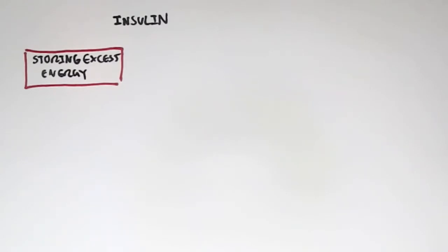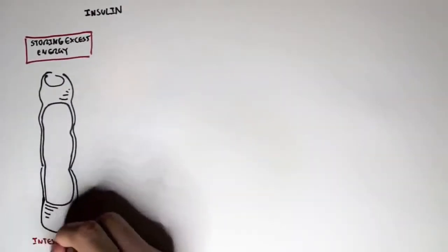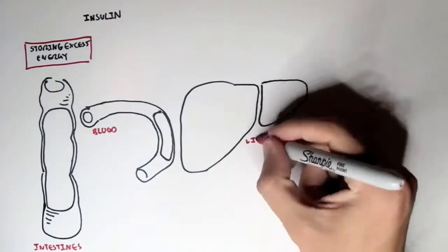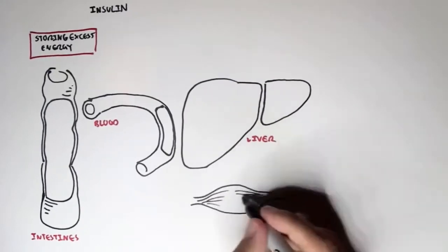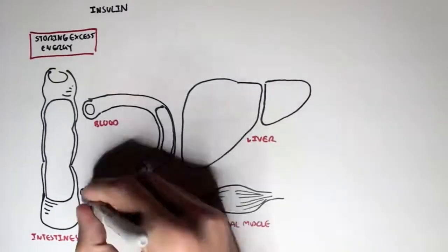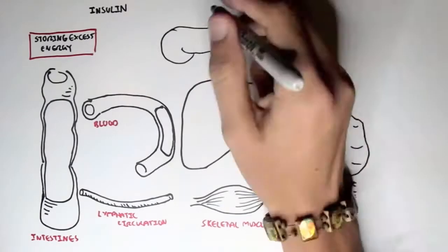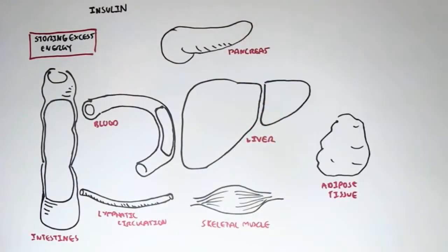Now I would like to show you the associated organs insulin has an effect on. For example, here we have the intestines, here we have the blood, here we have the liver, skeletal muscle, lymphatic circulation, adipose tissue, and finally the pancreas.